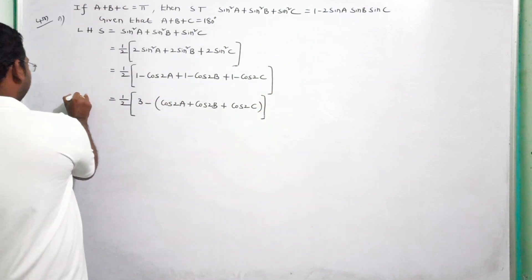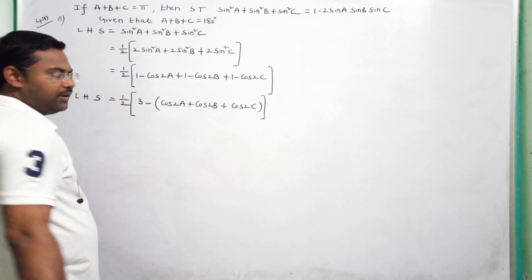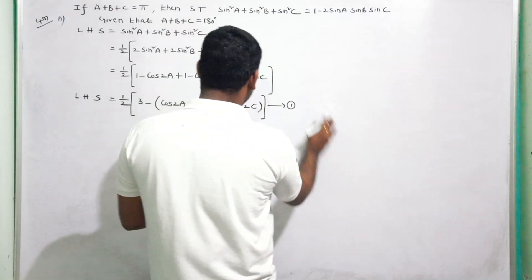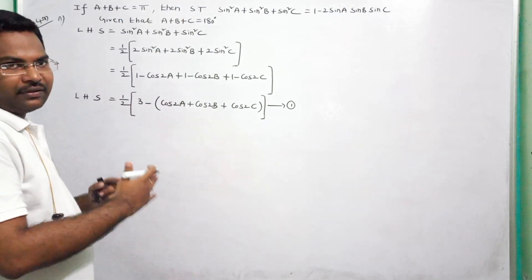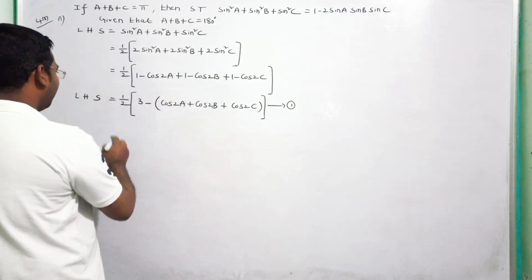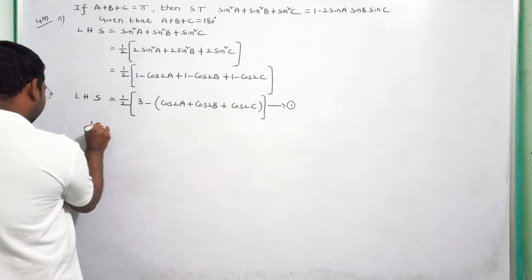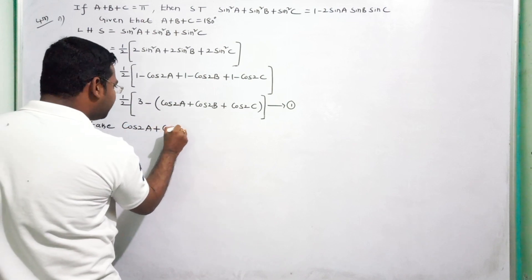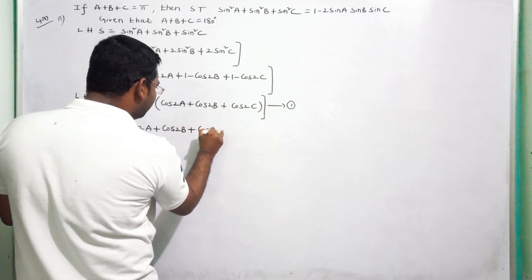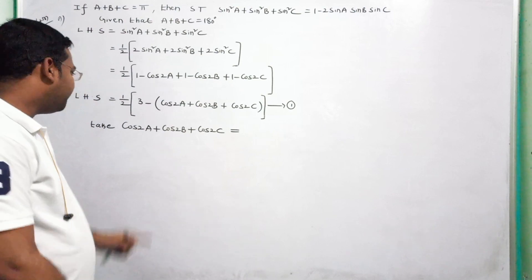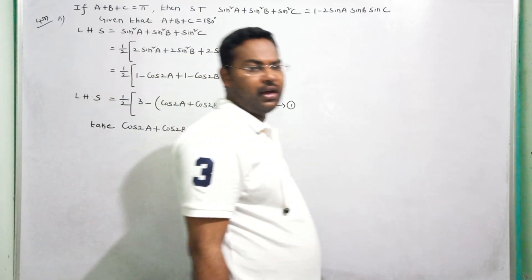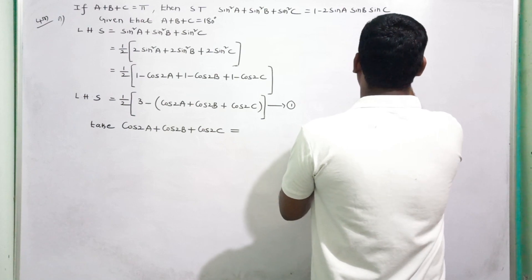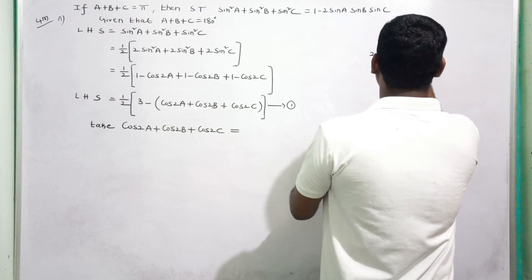Now we take cos2A plus cos2B plus cos2C separately as a sub-expression. We will find its value and substitute back to complete the simplification.